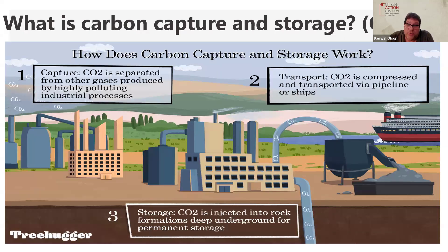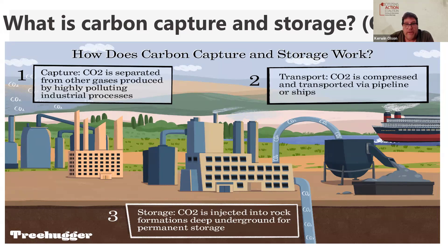That CO2 is then compressed into a supercritical state and highly pressurized, approximately 2,100 PSI, and then it has to be transported to where it is going to be stored or sequestered. That is generally done by putting the highly pressurized supercritical CO2 into a pipeline, transporting that CO2 via pipeline to the dump site, where allegedly it will be stored in perpetuity or potentially reused.